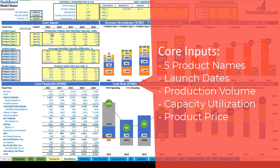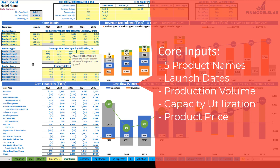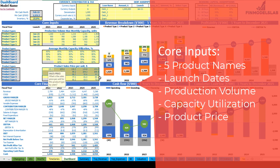Maximum monthly capacity means that in 2021 for product type 1 you can produce a maximum of 1,000 units per month. Obviously you will not always produce the maximum, so there is a monthly capacity utilization percentage by product types and by years. For example, if you put 80%, it means that for 2021 on average you will produce 800 units per month instead of the maximum 1,000. This percentage can grow over time — for example, 80, 82, 84, etc.